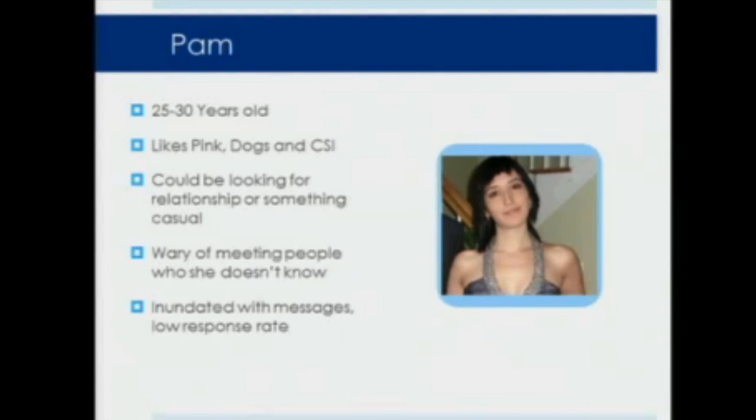This is Pam. She's a little younger, 25 to 30. She likes Pink the band, dogs, and CSI. She could be looking for a relationship or something casual, but like a lot of people she's wary about meeting people online. If you're a female on a dating website, you receive a lot more messages than you send out. Instead of going straight to look for people, first she'll filter through her messages and then start sending stuff out.